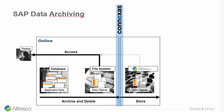At the end, that information is in the storage and can still be accessed. The process is: create the archive file, delete the information in the database system or in SAP, then store the file to Alfresco and still have this information accessible for the end user in SAP.